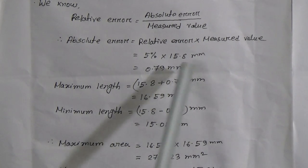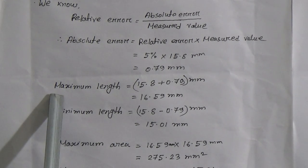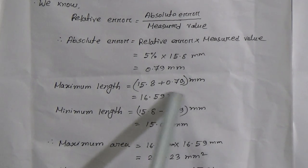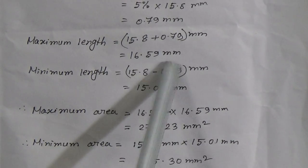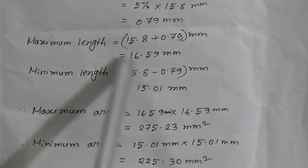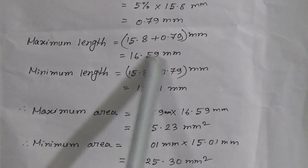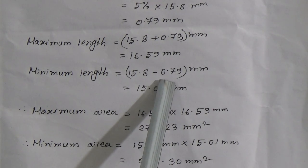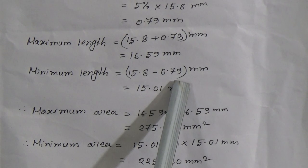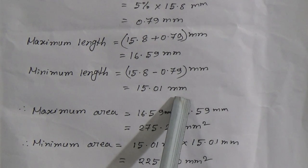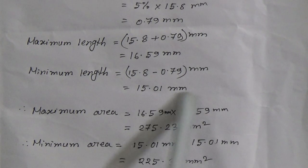This is our absolute error. Maximum length equals measured value plus absolute error: 15.8 plus 0.79, giving our maximum length. Minimum length equals measured value minus absolute error: 15.8 minus 0.79, giving the result 15.01 millimeter. So maximum length is 16.59 millimeter and minimum length is 15.01 millimeter.